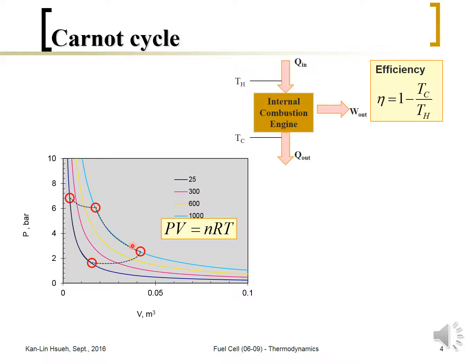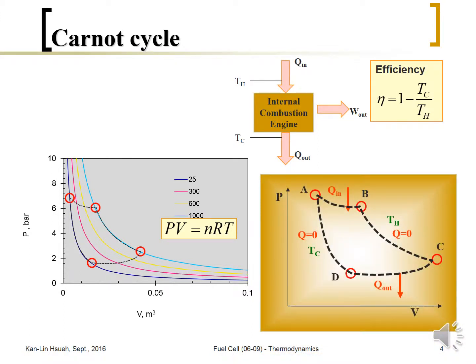The cycle keeps repeating — expansion and shrinkage — as the piston moves in and out. Among these four points: from A to B, heat Q_in is released into the system; from B to C is an ideal adiabatic process with no heat in or out, just volume expansion; from C to D is energy output; and from D back to A is also an adiabatic process at temperature T_C. From this, we know the Carnot cycle efficiency equals (T_H - T_C) / T_H, so greater temperature difference means greater efficiency.